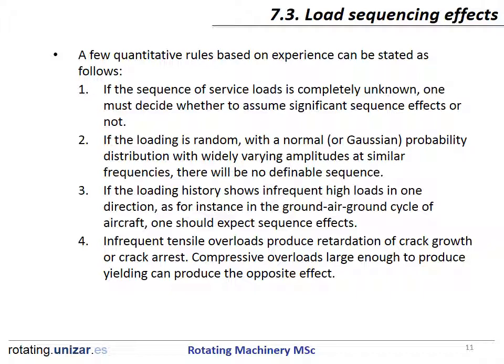If the loading history shows infrequent high loads in one direction — as for instance in the ground-air-ground cycle of aircraft — one should expect sequence effects. Infrequent tensile overloads produce retardation of crack growth or crack arrest. Compressive overloads large enough to produce yielding can produce the opposite effect.